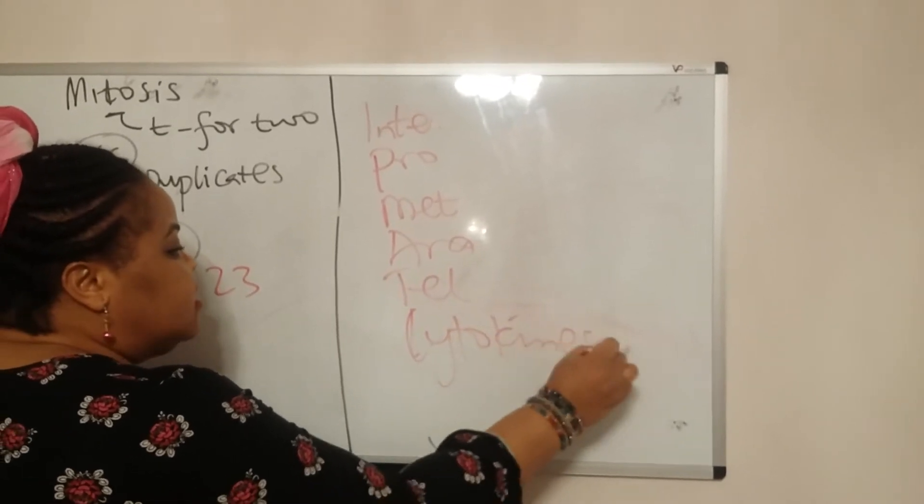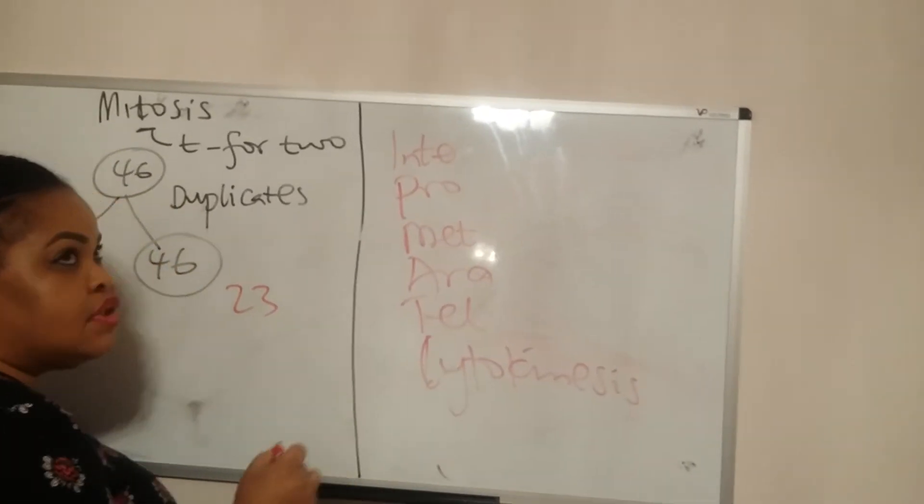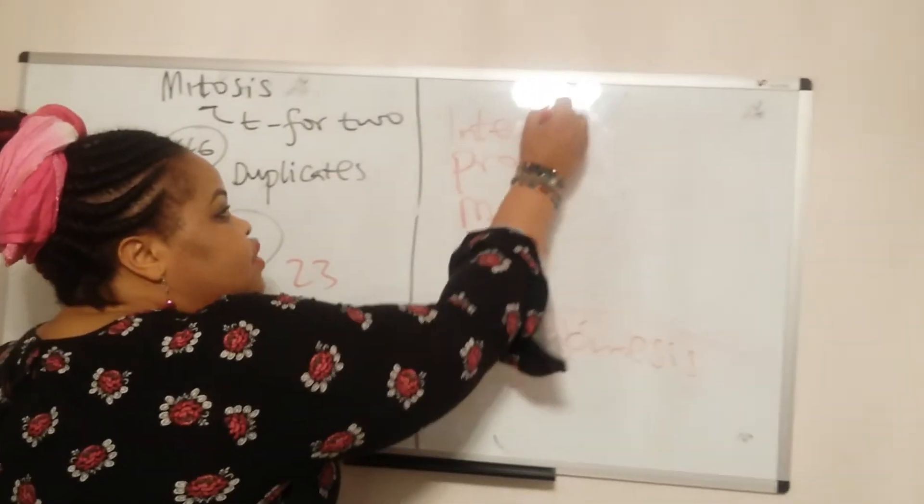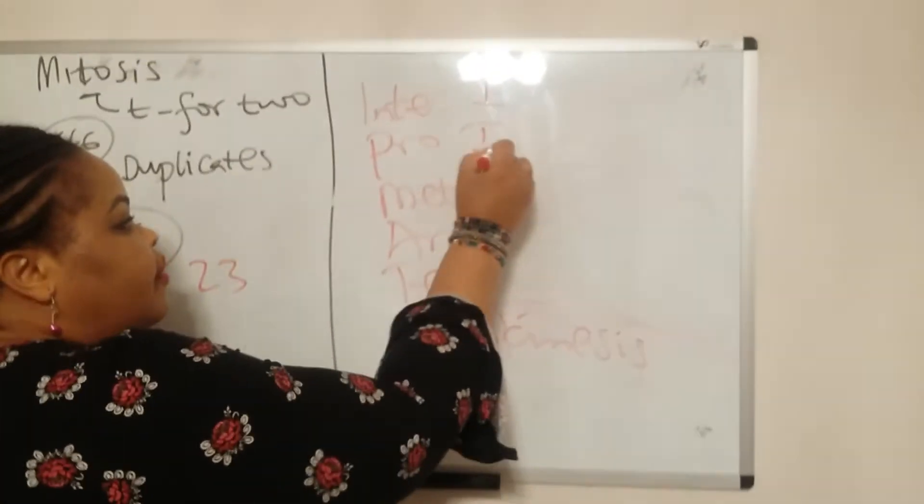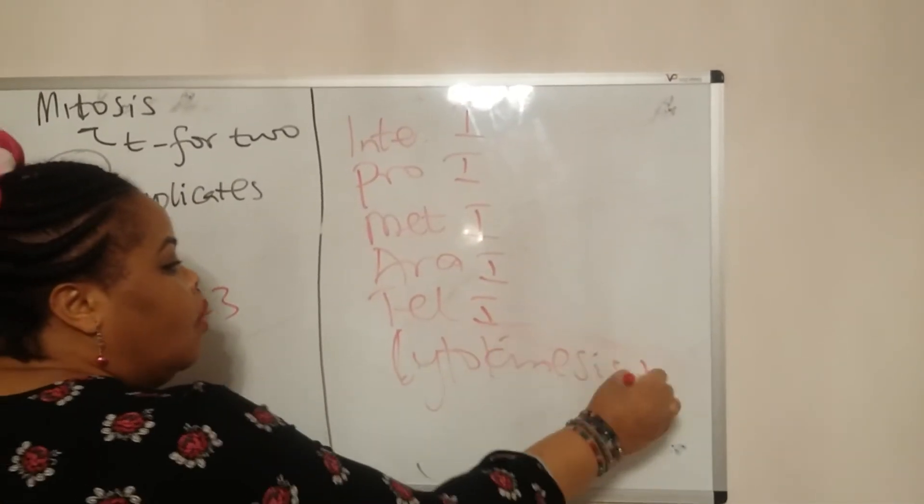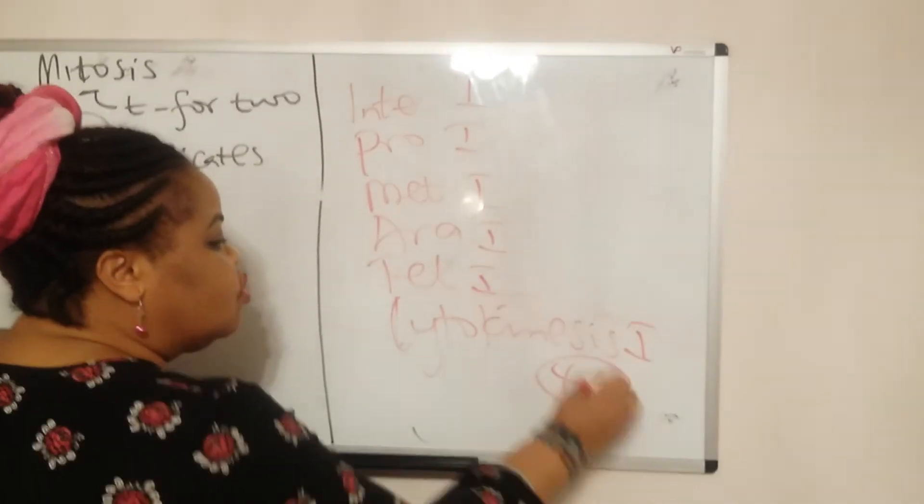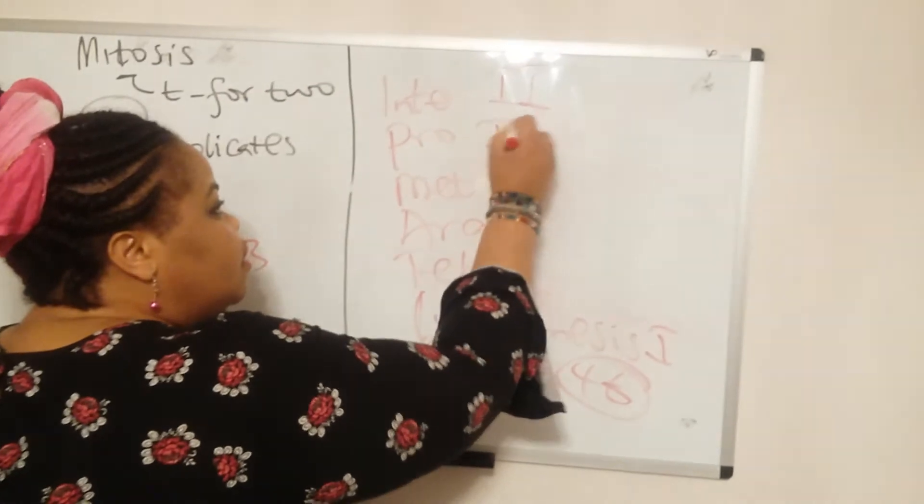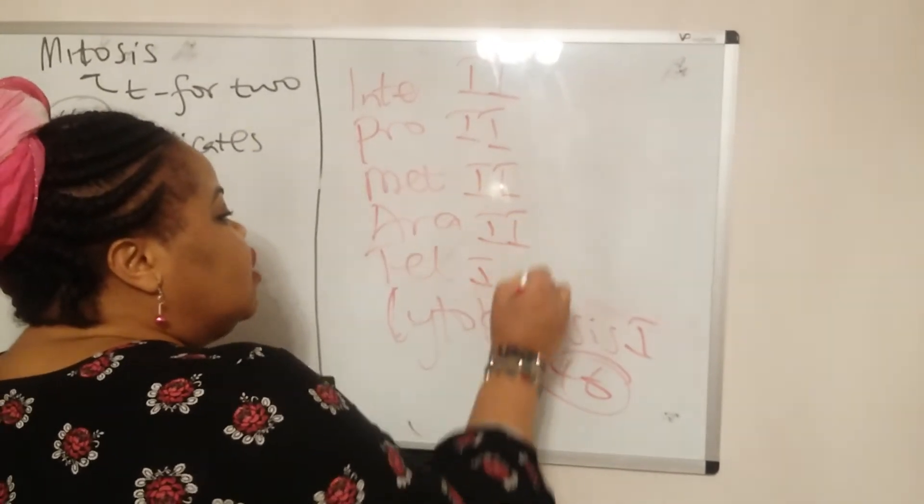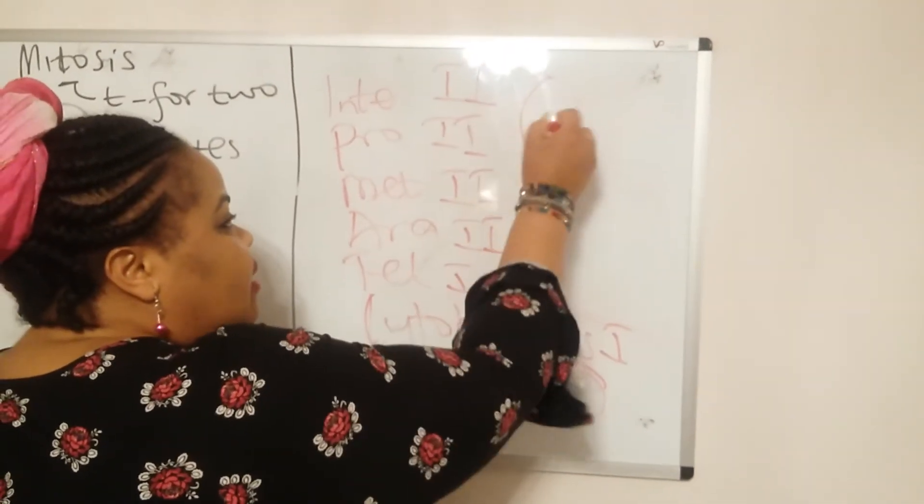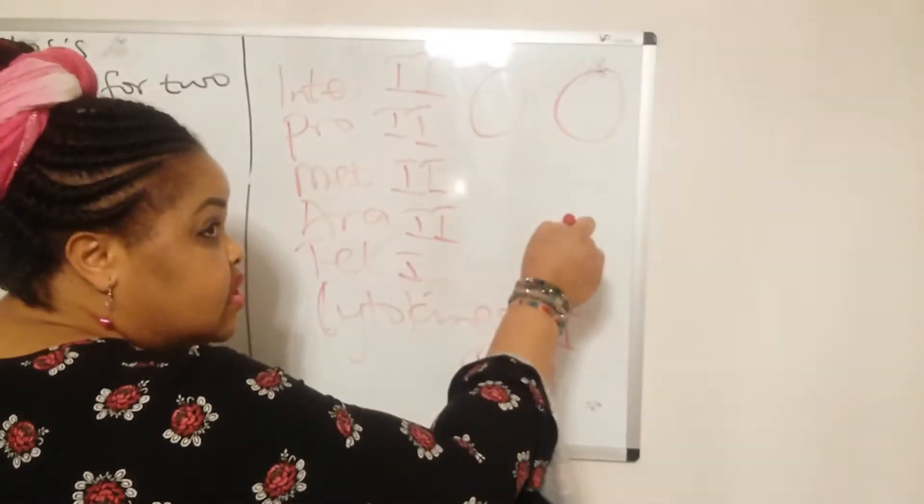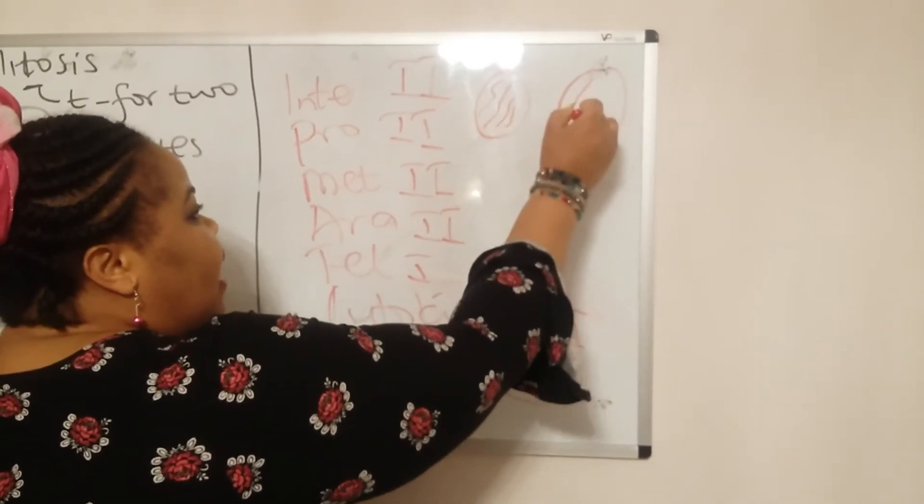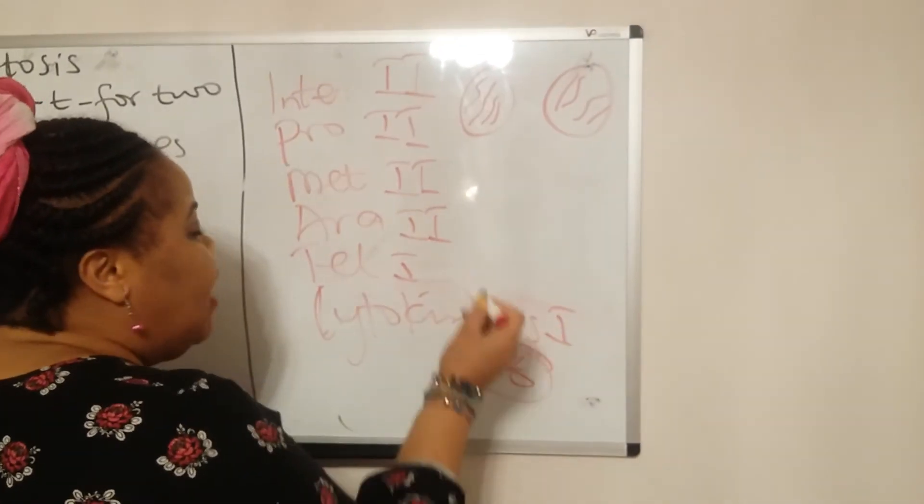If this is for mitosis, in the case of meiosis, all of these will be labeled with subscript one: interphase one, prophase one, metaphase one, and so on. That takes you to 46 chromosomes. Then you start the process all over as interphase two, prophase two, metaphase two. Instead of just one cell carrying out these phases, you have two cells doing it concurrently.